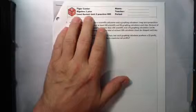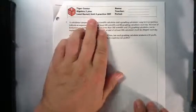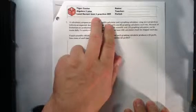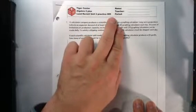All right, let's get the door. Hey, come on in. Welcome back to the Tiger Center at Lewis and Clark, seventh hour math lab. Today we're going to be talking about Algebra 2. We're revisiting Unit 2, Systems of Equations. This is practice 005.